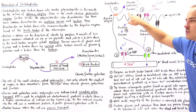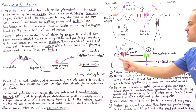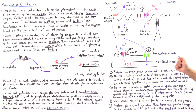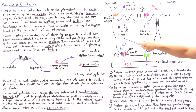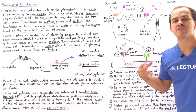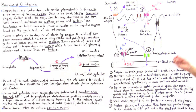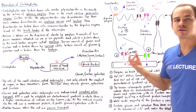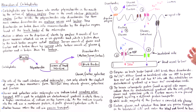Fructose, on the other hand, doesn't use this same system — it doesn't use ATP — and instead enters the cell via a different type of integral protein that allows for passive transport, without using any ATP molecules.